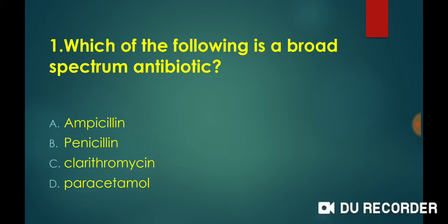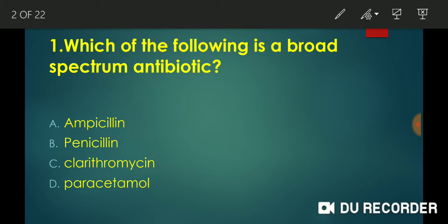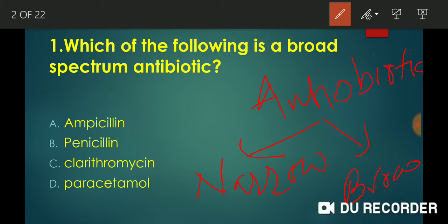Which of the following is a broad spectrum antibiotic? Options are: (A) Ampicillin, (B) Penicillin, (C) Clarithromycin, (D) Paracetamol. To answer this, we need to understand that antibiotics are divided into narrow spectrum and broad spectrum. Broad spectrum antibiotics act on both gram-positive and gram-negative bacteria, giving them a broader range of action.